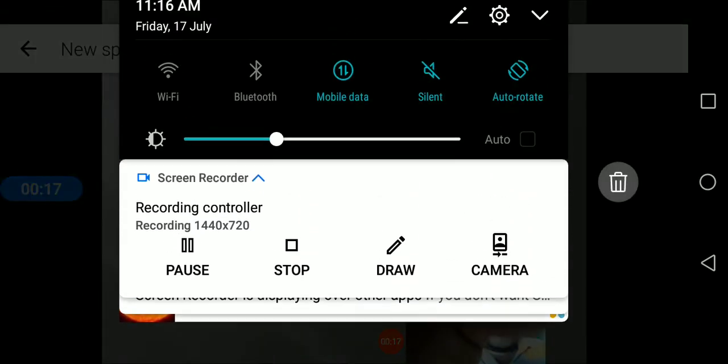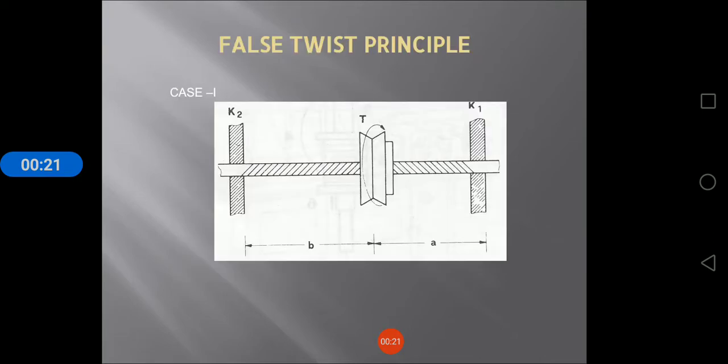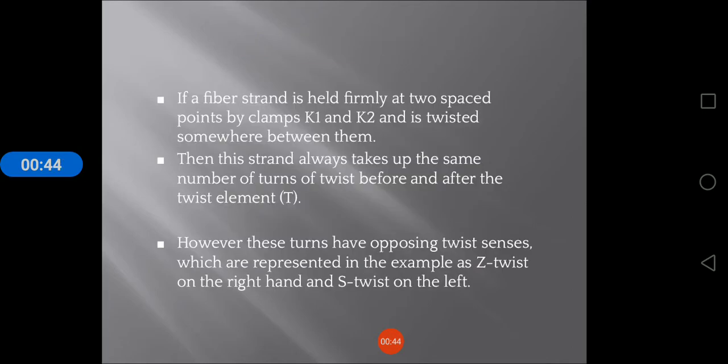False twist principles are very essential in new spinning systems and involve two clamps K1 and K2. It's also called simply supported beam, like in civil engineering, with two loads loading in opposite directions - one in a clockwise direction and one in anticlockwise direction.